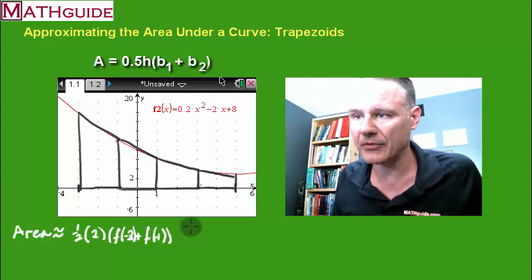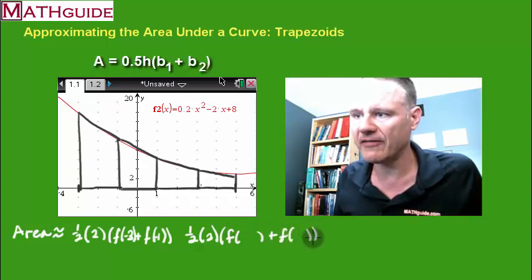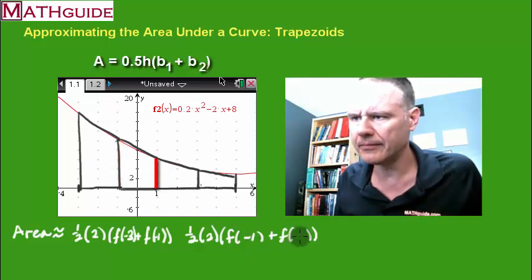So now how do I get the area of the next trapezoid? I'm going to try to leave myself more space. So the distance between the two bases is two. The bases are evaluated. We just evaluate the function, right? So this base would be the function evaluated at negative one. This one's going to be function evaluated at one. There's the area of the second one.